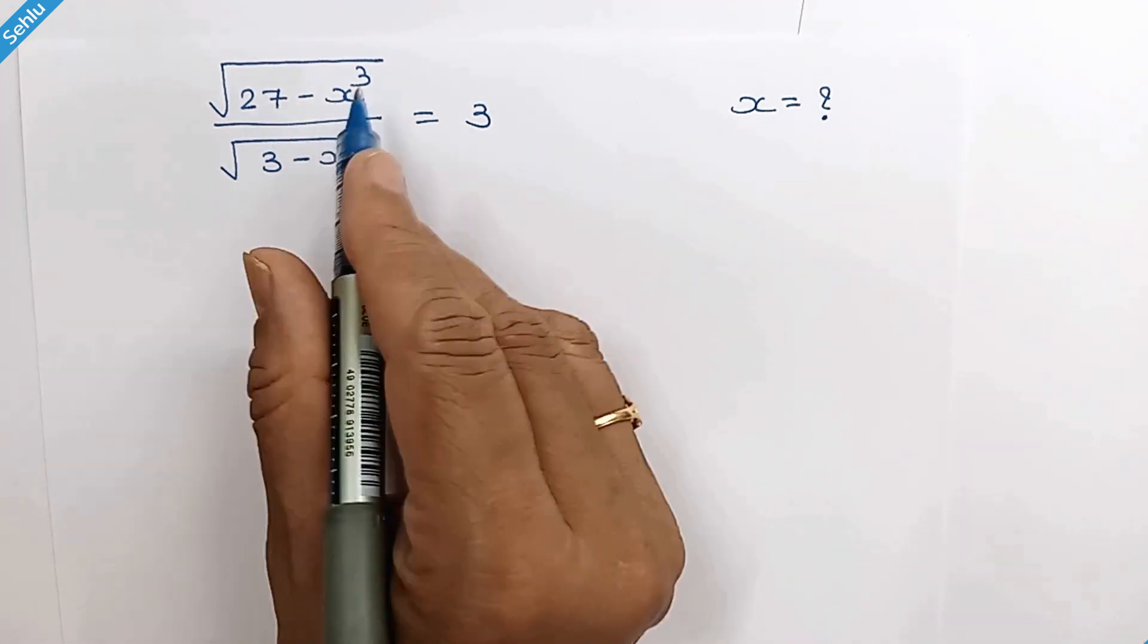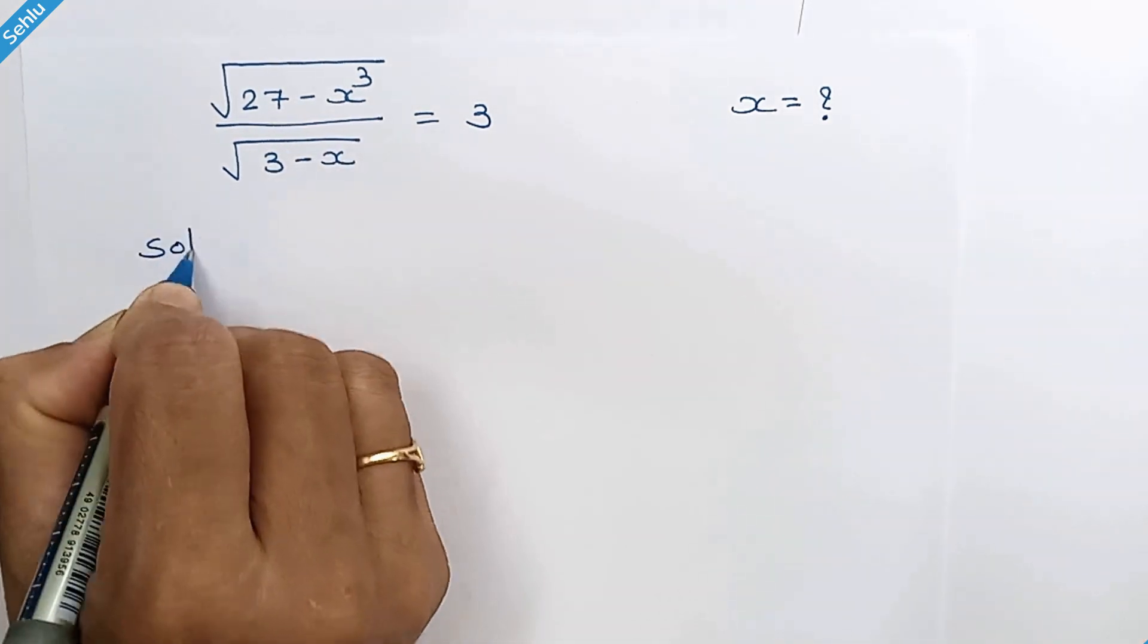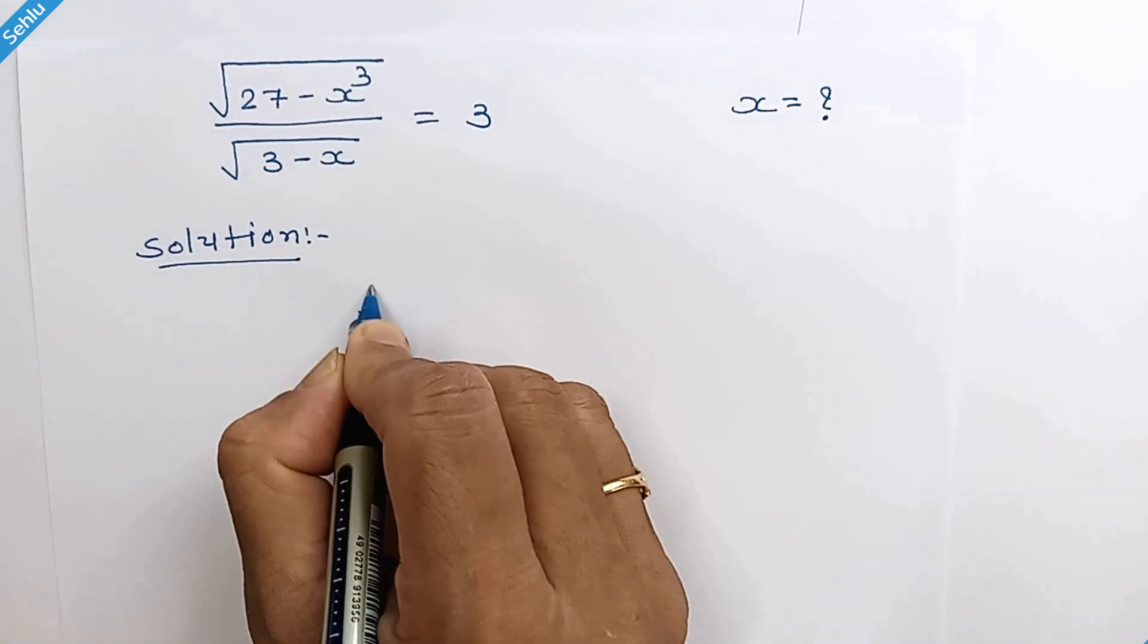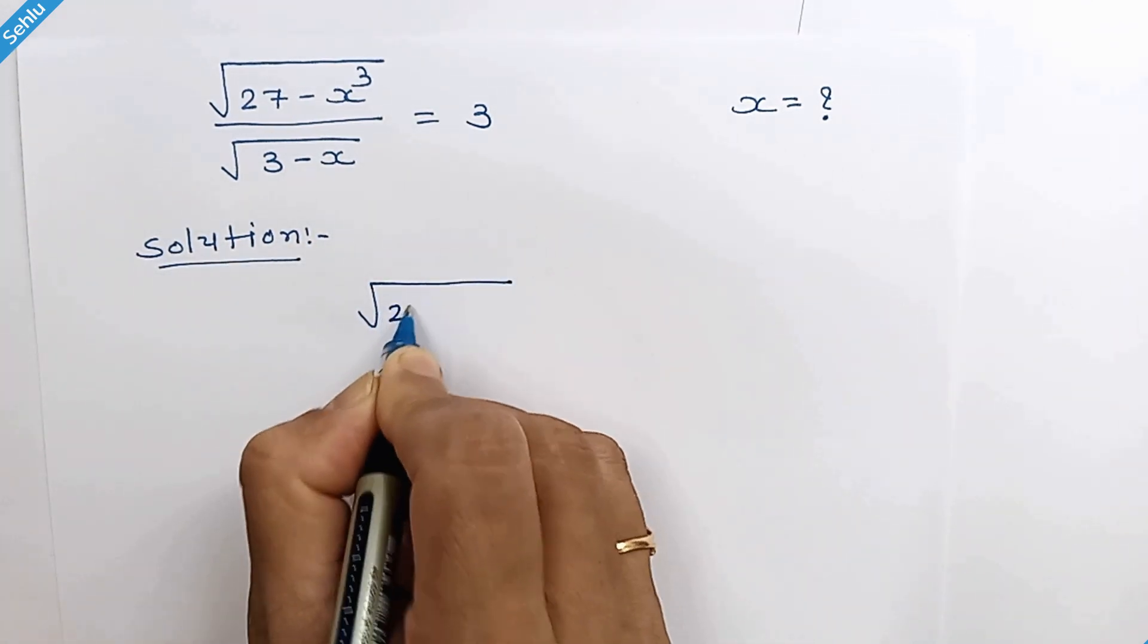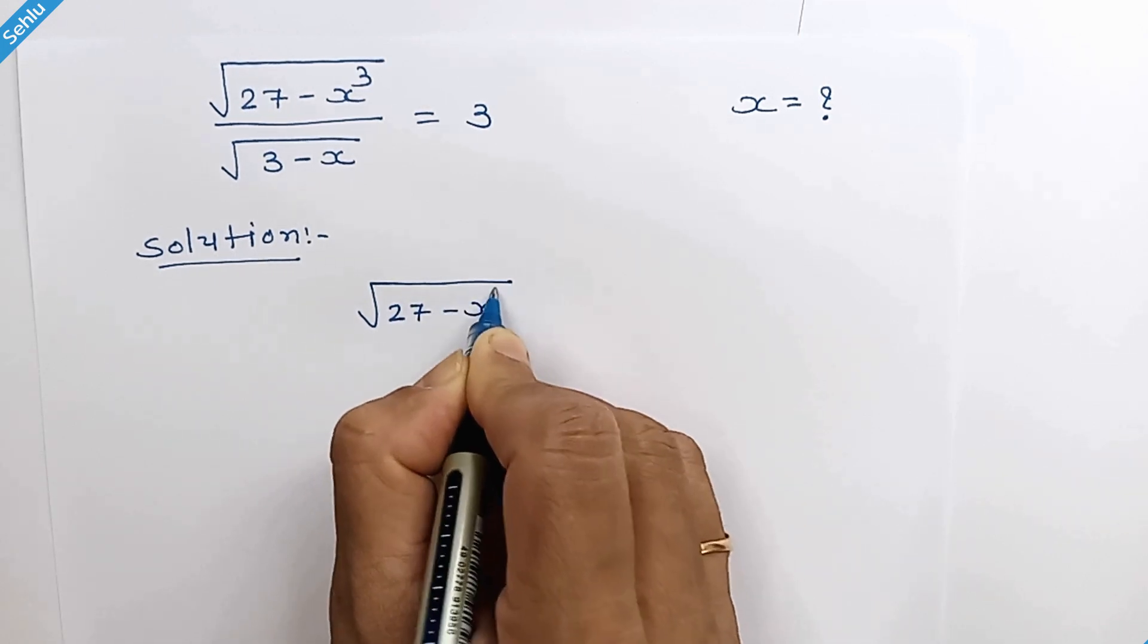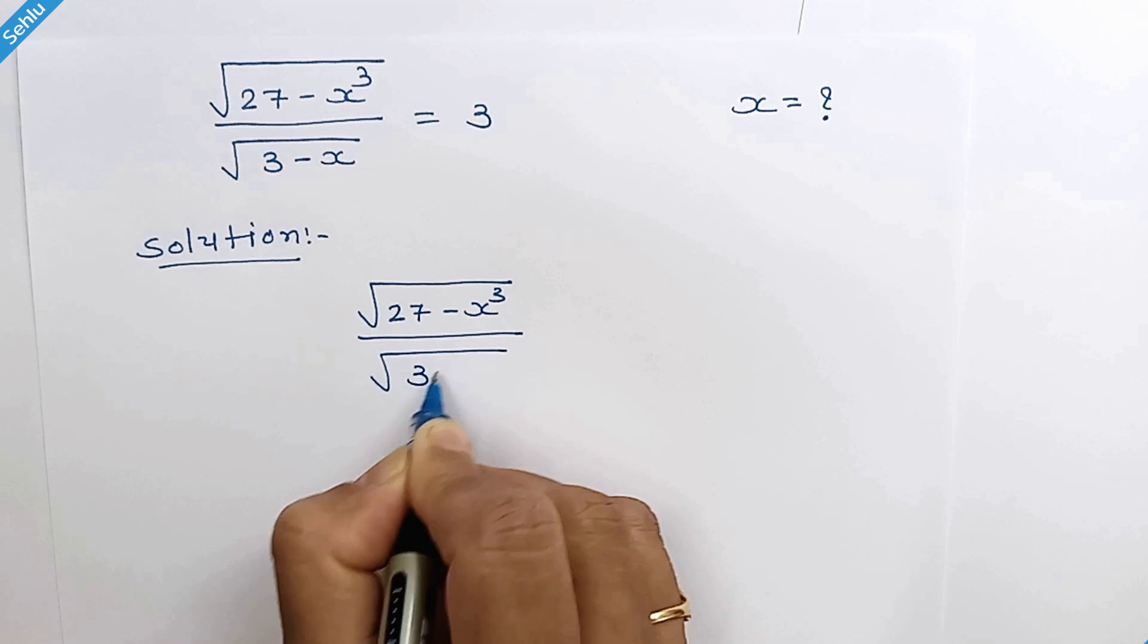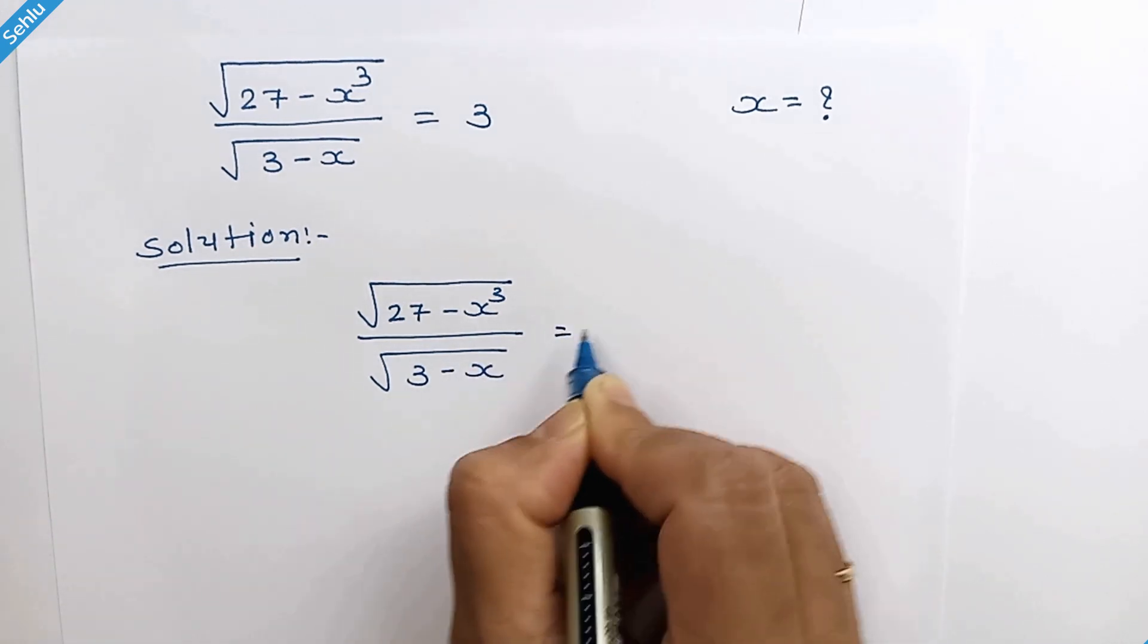Hello friends, how do we solve this? Let's see. The question is: square root of 27 minus x cube over square root of 3 minus x equals 3.